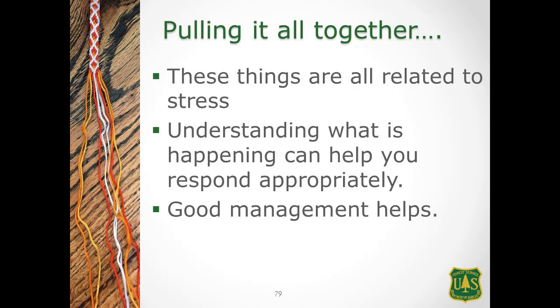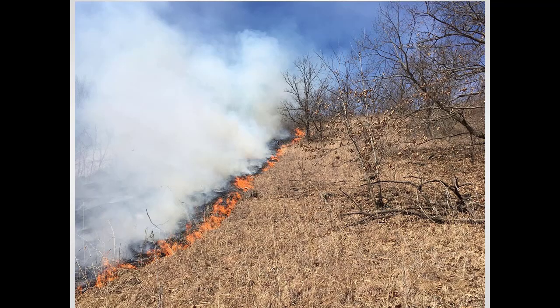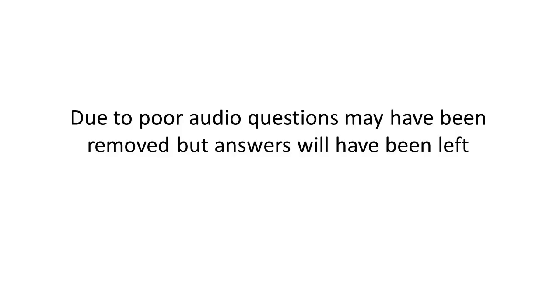Pulling it all together — most of what I talked about today is pretty much related to stress. If you understand what's happening out there, you can respond appropriately: know when to salvage, know what's going on in your forest. Good management really does help — it helps you avoid problems and salvage your value. Now to any burning questions. The question was about walnut twig beetle: is there a northern range to it? The northern range would probably be the northern range of black walnut, so it's kind of moot — but it is an insect from the southwest.